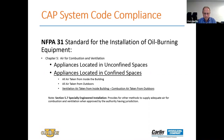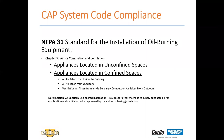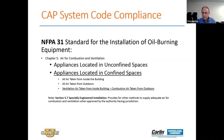NFPA 31 basically looks at two standards: unconfined space and confined space. By definition, an unconfined space is somewhere that you have at least 7,000 cubic feet of space for every 140,000 BTUs — every gallon of oil. If you cannot meet that definition, then you have what is determined to be a confined space, and you must decide whether air comes from inside the building, from outside, or a combination of ventilation air from inside and combustion air from outdoors.